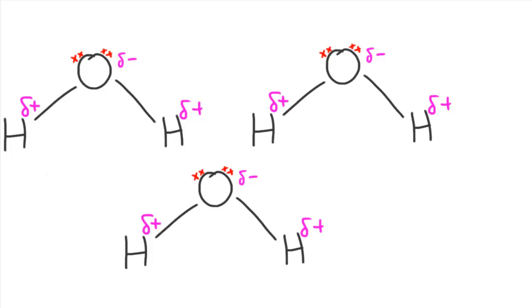The way we can draw this notation is we can draw a dashed line going from the lone pairs towards the hydrogen — so the hydrogen is going directly to the lone pair. You can draw the line going through the lone pairs if you want to. What you draw is a dashed line like that, so the hydrogen is pointing directly to the lone pair. This hydrogen would be doing the same, going directly to the lone pair. This is more or less all the notation we need to use to represent that there's a hydrogen bond present.